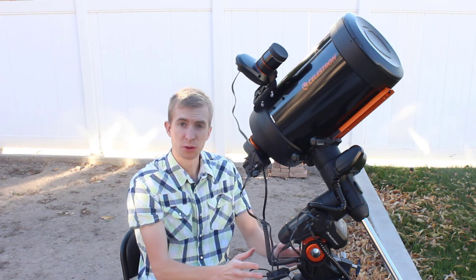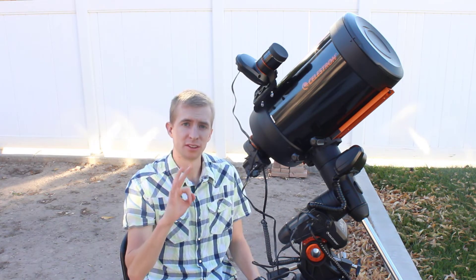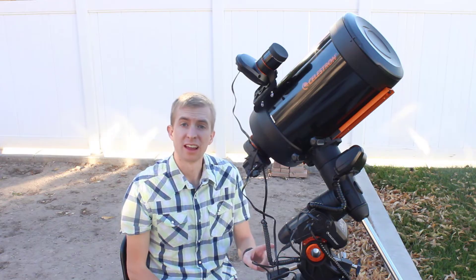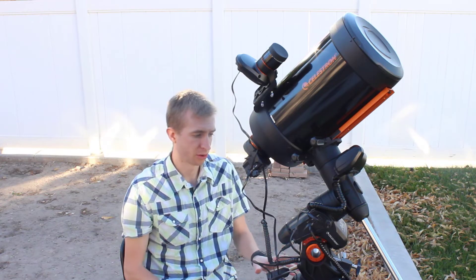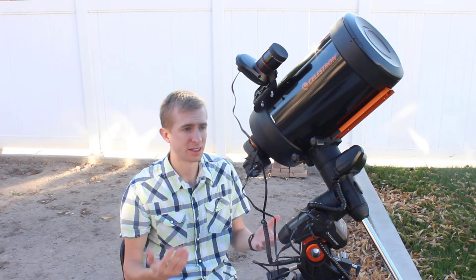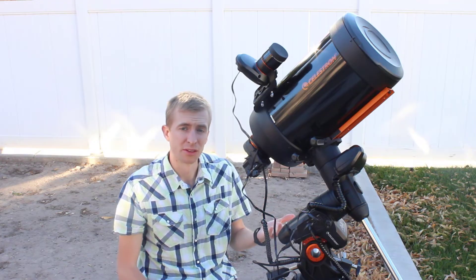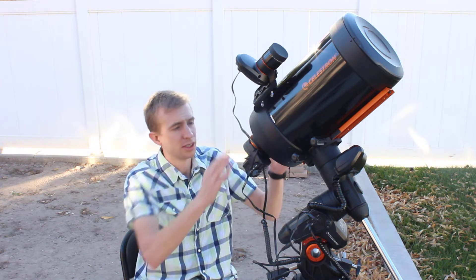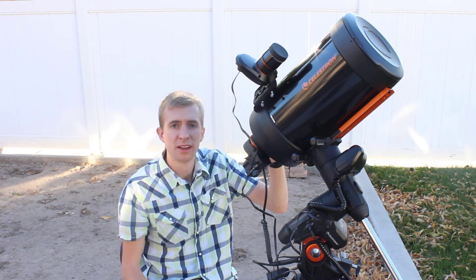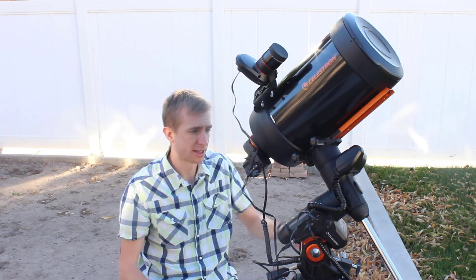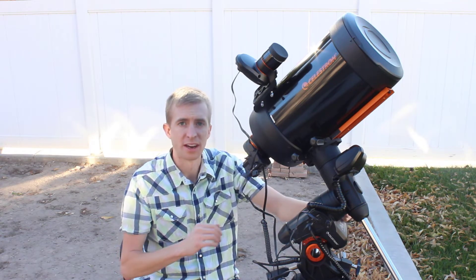When using the StarSense on an equatorial mount, there's three things you really need to do. Number one is you need to level your mount, so make sure you do that before you start. Otherwise, you're going to get some pretty erroneous results. Number two is you need to make sure that your mount is at the index marks. And currently mine is not, so I'm going to fix that right now.